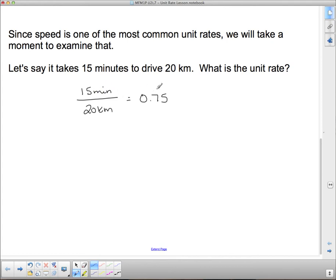But what does that 0.75 mean in this case? Well, the top is minutes, so we write minutes. And the bottom is kilometers, so we write per kilometer. So, 0.75 minutes per kilometer. That means that it takes 0.75 minutes, so not even a full minute, to go one kilometer if you're driving that way.